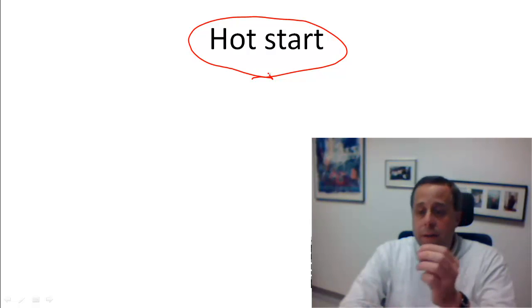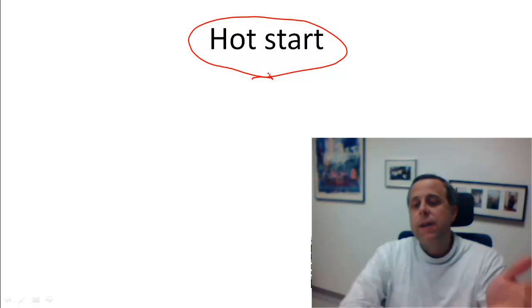You first heat this up to 95 degrees and only then you open the lid again, you throw in the Taq polymerase, you close the lid, you close the lid of the machine and then you let the reaction start.